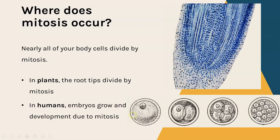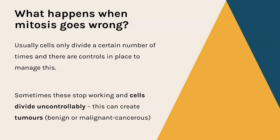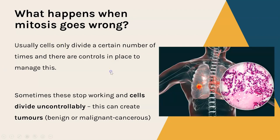In humans, mitosis occurs as embryos are growing - here we have the first cell, the zygote after sperm and egg fuse, and all the new cells doubling and replicating happen by mitosis. Sometimes mitosis does go wrong. Usually there are controls in place to make sure cells only replicate when needed and at an appropriate speed. However, sometimes those controls stop working and a cell can divide uncontrollably by mitosis, producing far more cells than needed. That is what a tumor is - a group of cells created by this uncontrollable division. Some tumors are benign, meaning not cancerous; some are malignant, meaning they are cancerous.